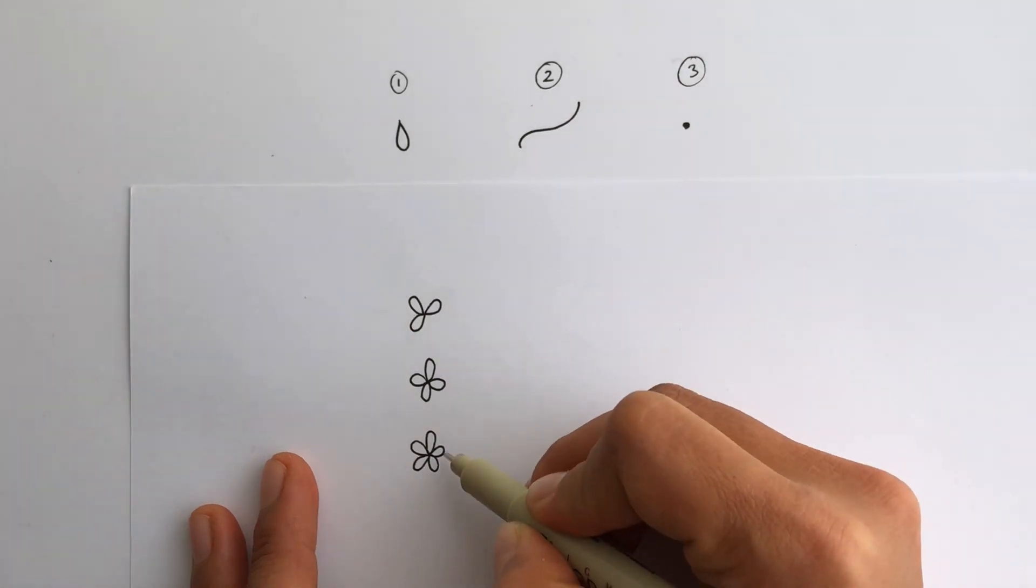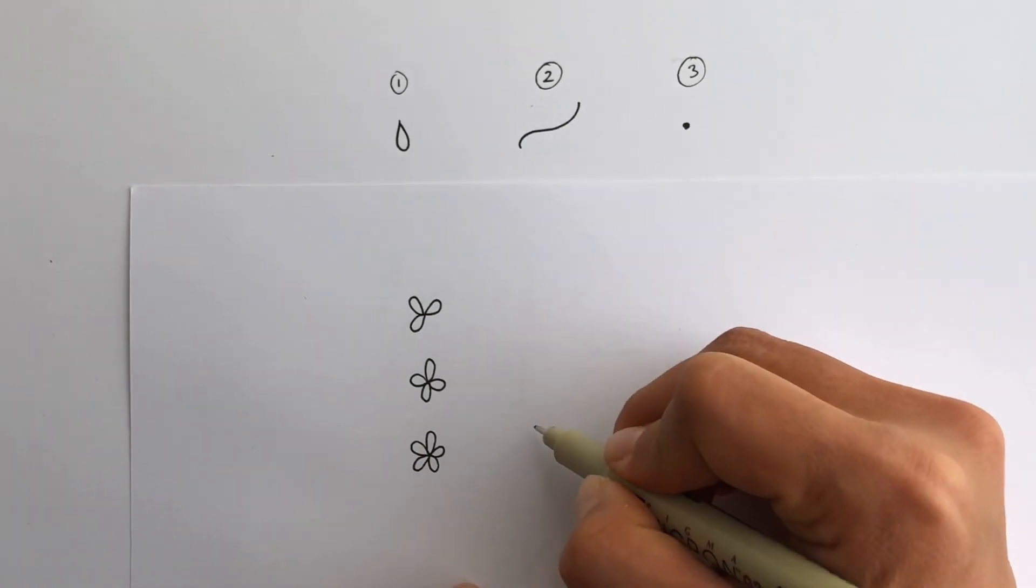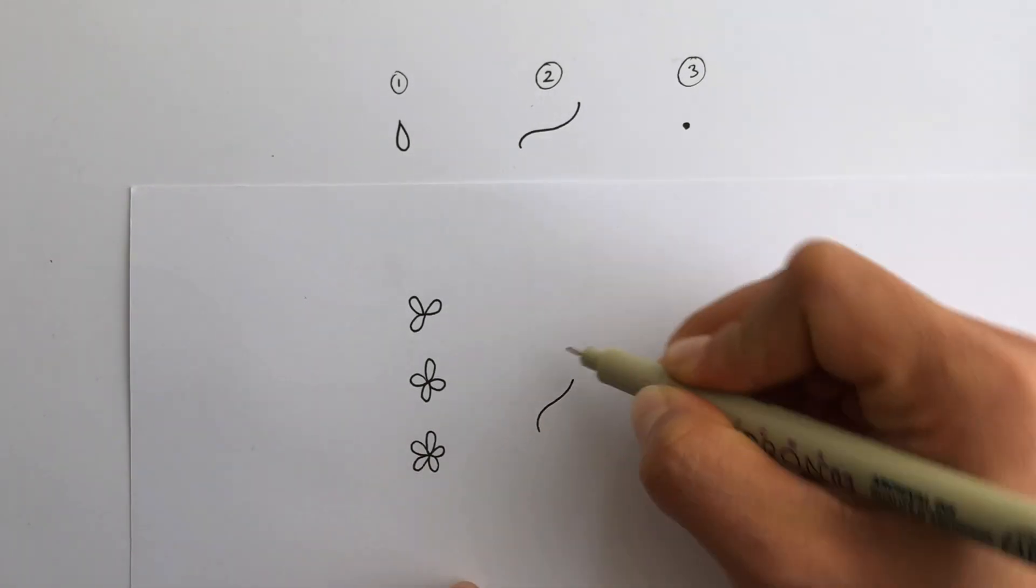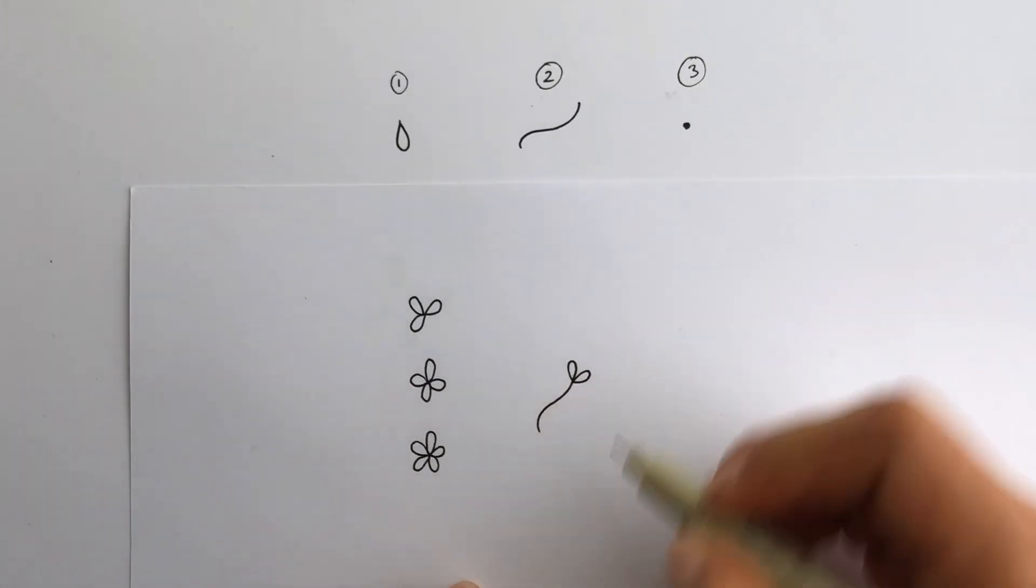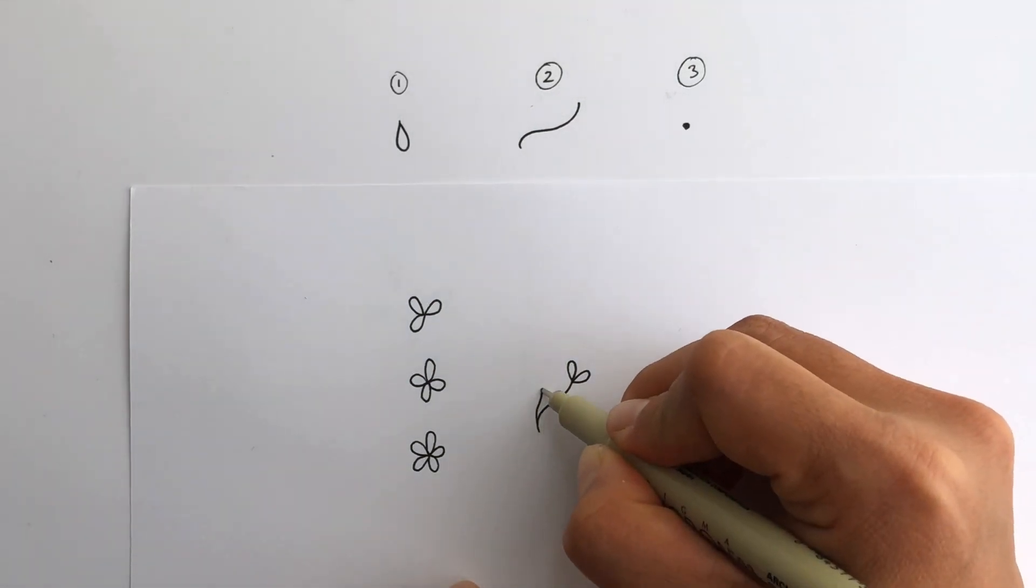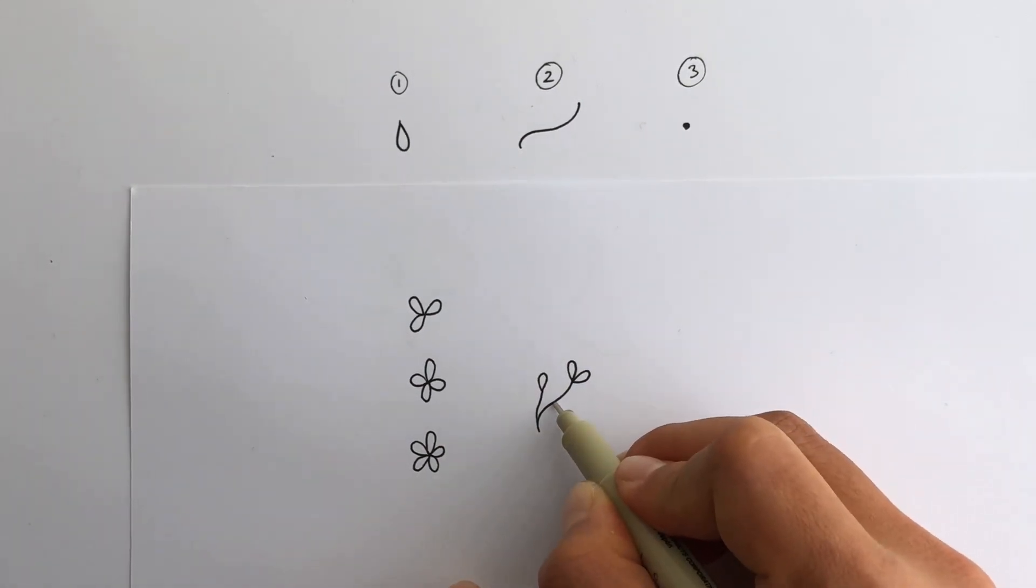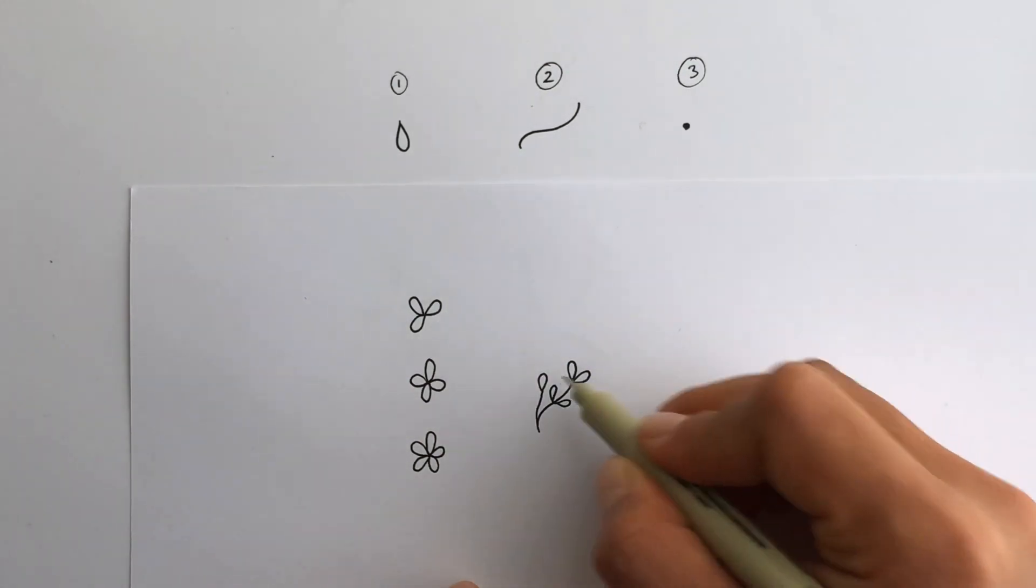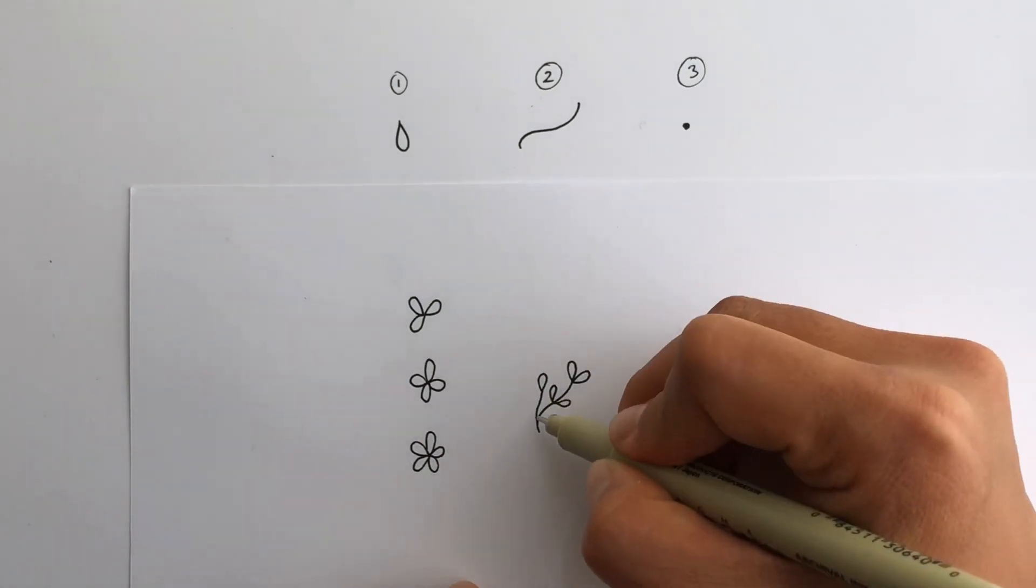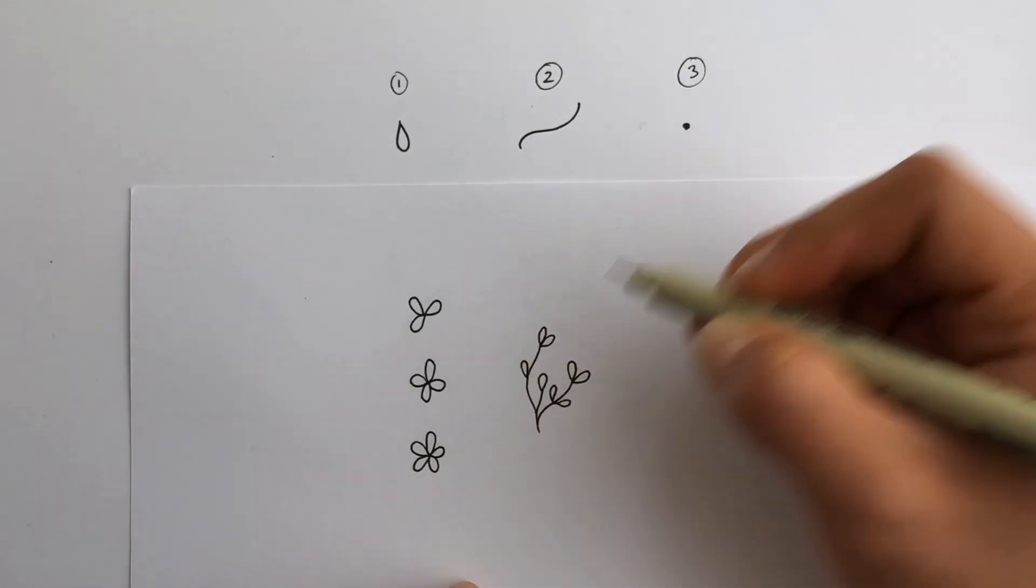You can use any of those three, and then also this teardrop shape can not only be the petal of a flower, it can be a leaf. So you can do an s-curve with a leaf on the end, or two leaves on the end. And you can build off of it with another s-curve and a leaf, or you can do a leaf directly off of it, off of the vine here. And you see you start to get sort of this vine kind of look with leaves coming off it. And you can kind of build as much as you want.